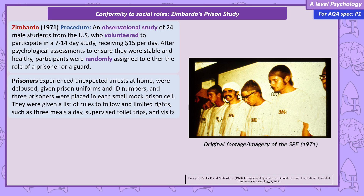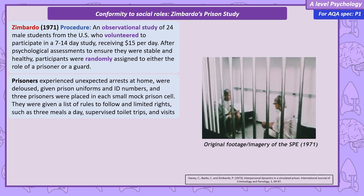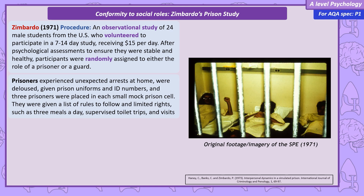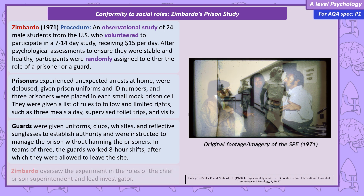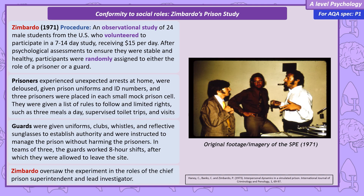The prisoners had a list of rules to follow, but also had rights, like free meals a day, supervised toilet trips, and visits from family. Each cell contained three prisoners. To give the guards an appearance of authority, they were given uniforms, a club, whistles, and sunglasses. Their instruction was to manage the prison without resorting to violence. Unlike the prisoners, the guards returned home at the end of their eight-hour shift. Zimbardo played the part of Chief Prison Superintendent and Lead Investigator — a point he returns to in the evaluations.